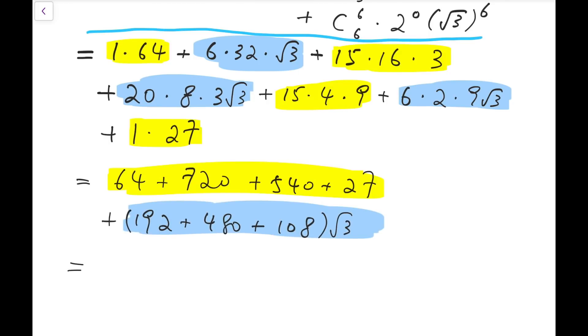So if we add them, we will get 1351 for the yellow group. And for the blue group, you will get 780 times square root of 3. So this is what we will get if we expand 2 plus square root of 3 all to the power of 6.